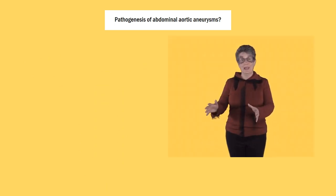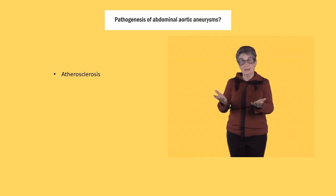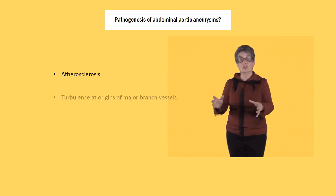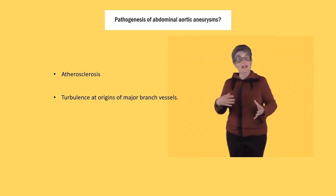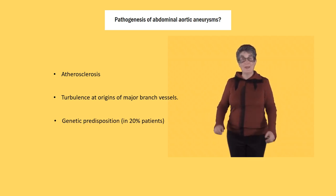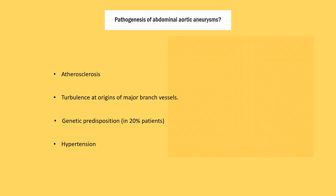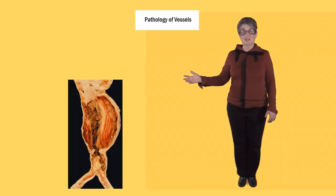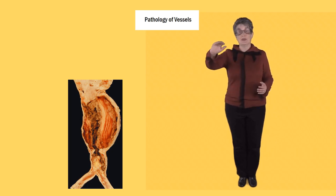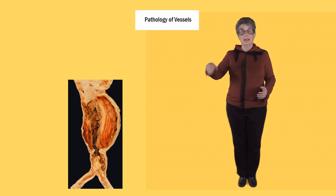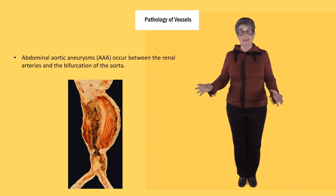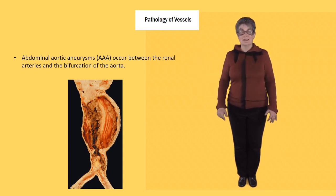Let's think about the abdominal aortic aneurysm. The primary cause is atherosclerosis, but it happens mostly just below the renal arteries because there's a lot of turbulence in that area, further weakening the wall. Hypertension also plays a part as it increases degeneration in the media, and there's a genetic predisposition in about 20% of patients. This picture illustrates an abdominal aortic aneurysm filled with layered blood clot, positioned between the renal arteries and the bifurcation of the aorta, forming what we call Zahn's lines. This blood clot might well embolise and cause ischaemia further down the arterial tree.